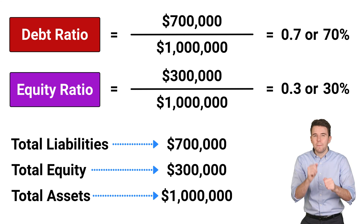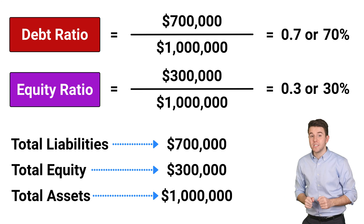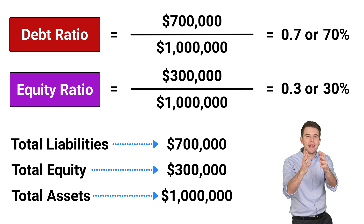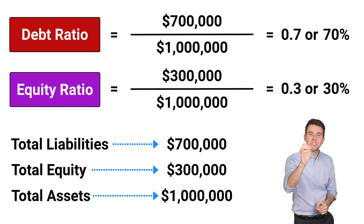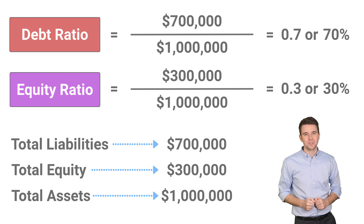However, when the company can make more money with these funds than it pays in interest, it is taking advantage of the potential benefits of financial leverage. In sum, both the Debt Ratio and Equity Ratio are important tools that help us understand the financing structure of a company.